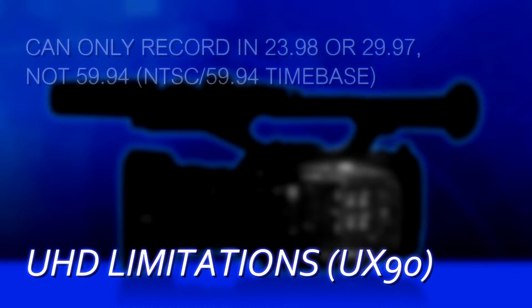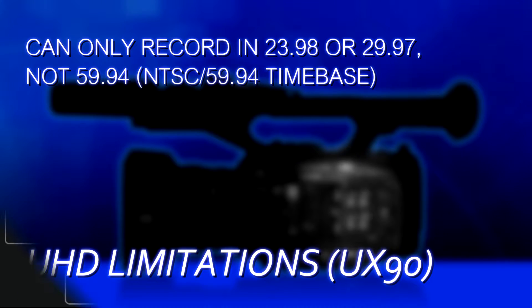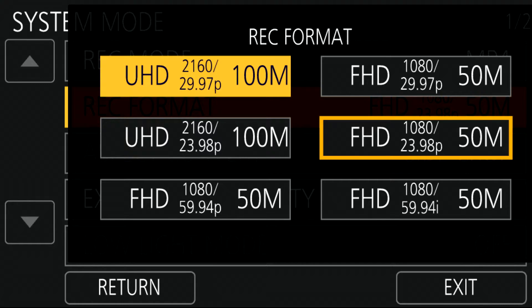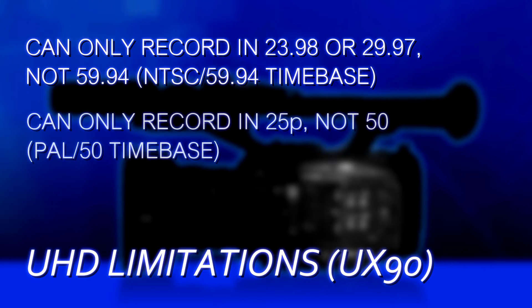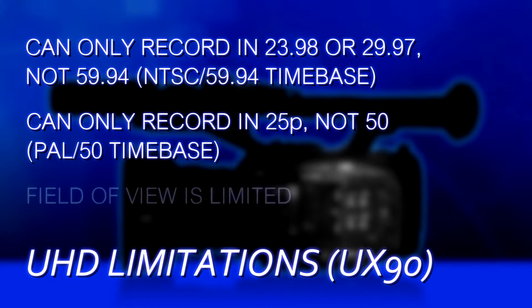But there are still some good reasons for choosing FHD. There are two limitations the UX90 has when going to UHD. Number one, it can't do all the frame rates — it can only do 23.98 or 29.97; it cannot do 59.94. On a PAL camera it can only do 25, not 50. So if you need that live, looking-through-a-window news look, you can't really get that in UHD on the UX90. You can get it in FHD at 1080 59.94p, which gives you that live look.